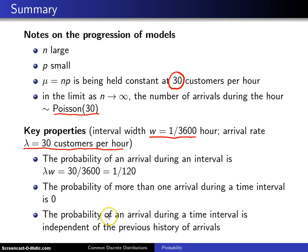And finally, the probability of an arrival during a time interval is independent of the previous history of the arrivals. In other words, the coin has no memory. It doesn't remember what has happened in the past.